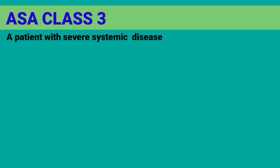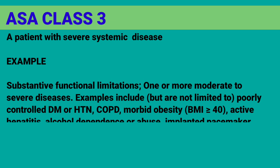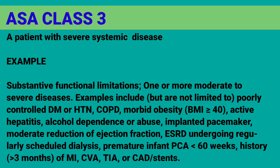ASA Class 3 is a patient with severe systemic disease with substantive functional limitations involving one or more moderate to severe diseases. Examples include poorly controlled DM or HTN, COPD, morbid obesity with BMI over 40, active hepatitis, alcohol dependence or abuse, implanted pacemaker, moderate reduction of ejection fraction, ESRD undergoing regularly scheduled dialysis, premature infant PCA less than 60 weeks, and history greater than 3 months of MI, CVA, TIA, or CAD with stents.